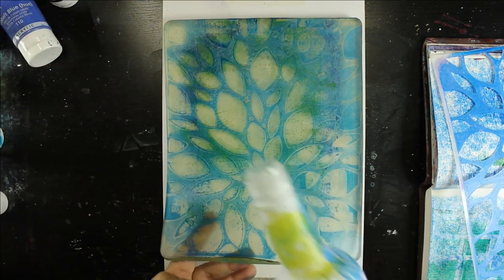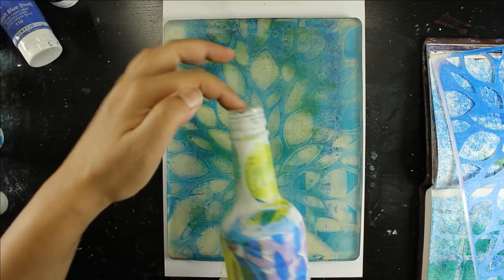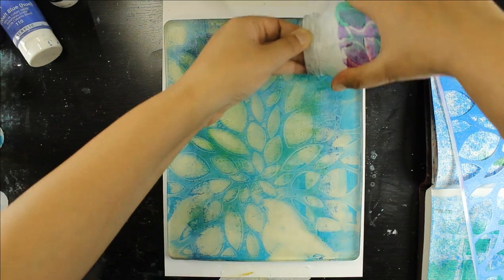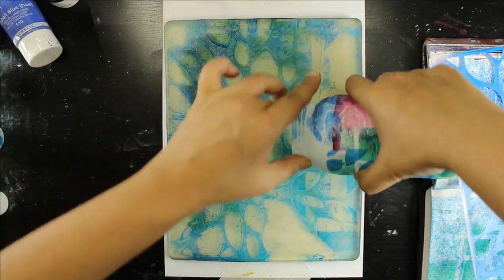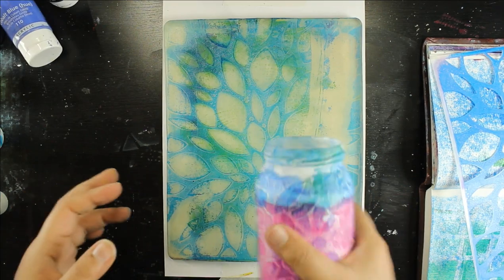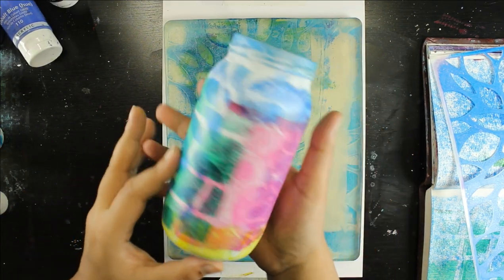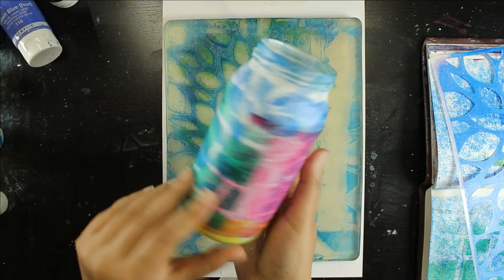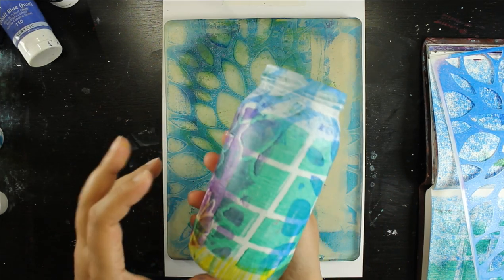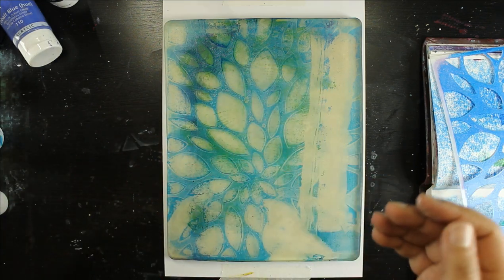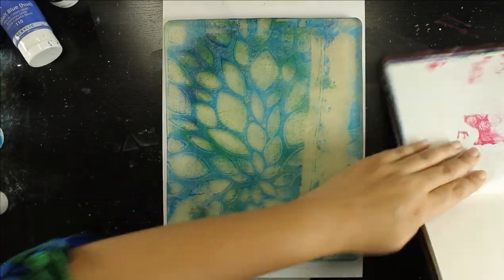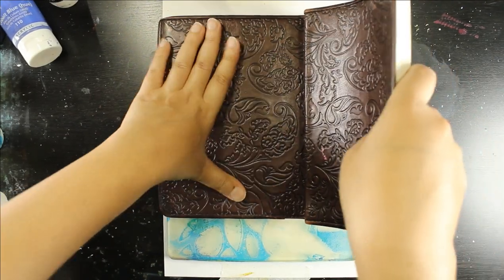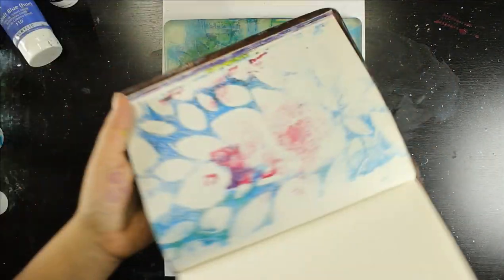I was inspired by seeing pottery on Instagram and ceramic artists use their gel plates to apply their various dyes and paint onto their finished pieces of pottery with a gel plate. And I thought, why can't I try doing that with some glass bottles and jars that I always have lying around.